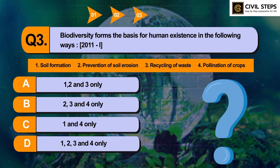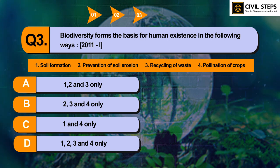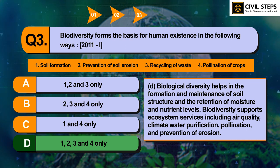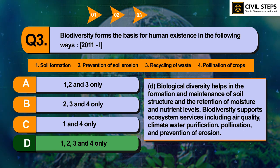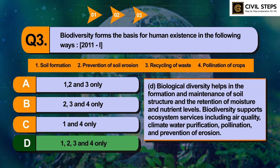The answer of this question is option number D — 1, 2, 3, and 4. Biological diversity helps in the formation and maintenance of soil structure and the retention of moisture and nutrient levels. Biodiversity supports ecosystem services including air quality, climate, water purification, pollination, and prevention of erosion. You should know the basic functions of biodiversity and ecosystems, as UPSC can ask questions on ecosystem functions where 3 or 4 options are given and you have to identify the correct ones.